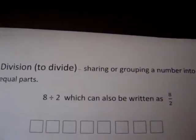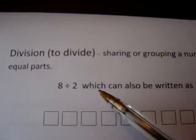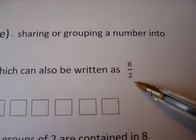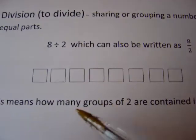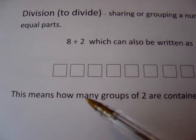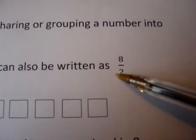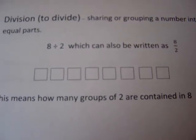For example, if we have 8 divided by 2, that can also be written as 8 over 2 in fraction style. In other words, this means how many groups of 2 are contained in 8.